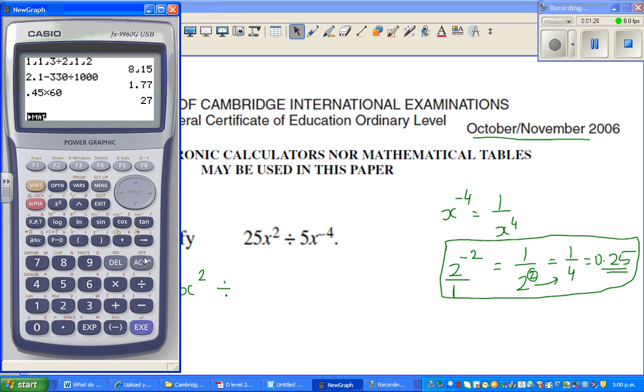So I'll show this on a calculator. You go 2 raised to negative 2. The calculator will give you 0.25. This is how the calculator works.